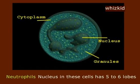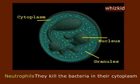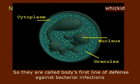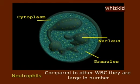Neutrophils: the nucleus in these cells has five to six lobes. They kill bacteria in their cytoplasm, so they are called the body's first line of defense against bacterial infections. Compared to other white blood corpuscles, neutrophils are large in number.